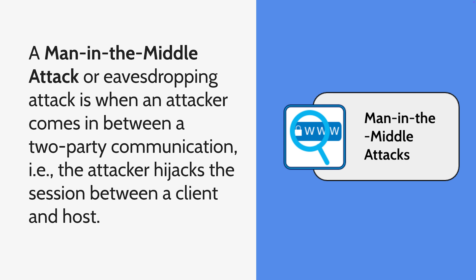When a man-in-the-middle attack happens, hackers are able to get in between these two parties of communication and redirect the information being passed back and forth through themselves. They're able to access and see any sort of data being transferred between your computer and the Wi-Fi network you're connected to, meaning they can see what you're doing and the information you're sharing, leaving your data vulnerable for them to take.